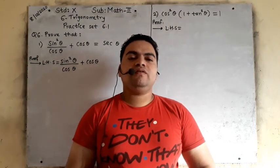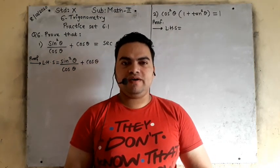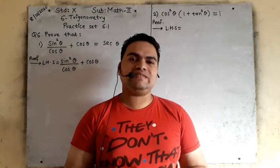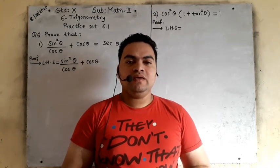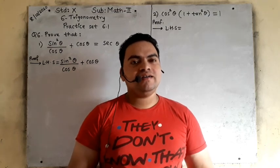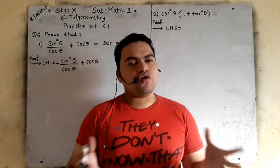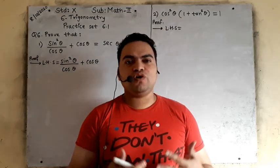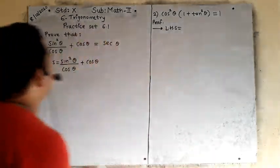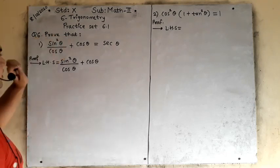Hello everyone. After practice set 6.1 question number 5, we will now start question number 6 of practice set 6.1. Question number 6 is all about 'proof that', and here we will utilize trigonometric identity formulas to solve the given ratios. Please look at the board — it is very easy.